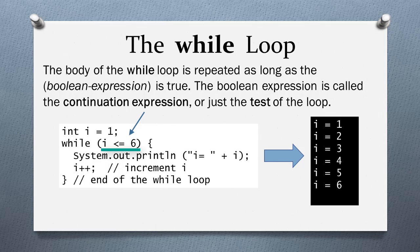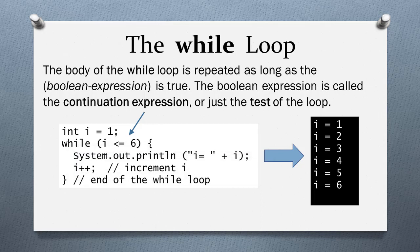The body of the loop has two statements. A print line outputs the value of i. The second statement increments i so that i starts at 1 and increments all the way to 7. When i is a 7, the boolean expression for the while becomes false and the body of the loop is no longer executed.